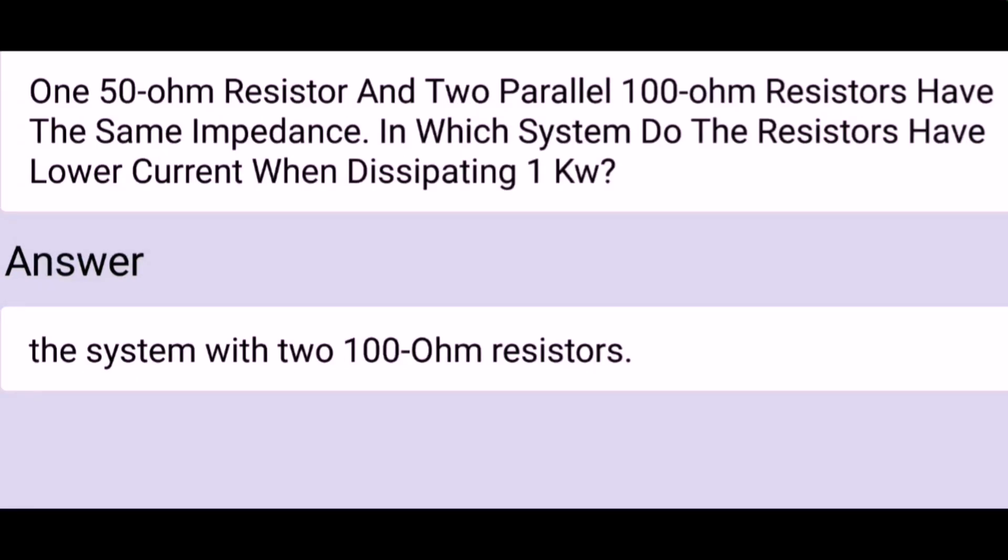One 50-ohm resistor and two parallel 100-ohm resistors have the same impedance. In which system do the resistors have lower current when dissipating 1 kilowatt? The system with two 100-ohm resistors.